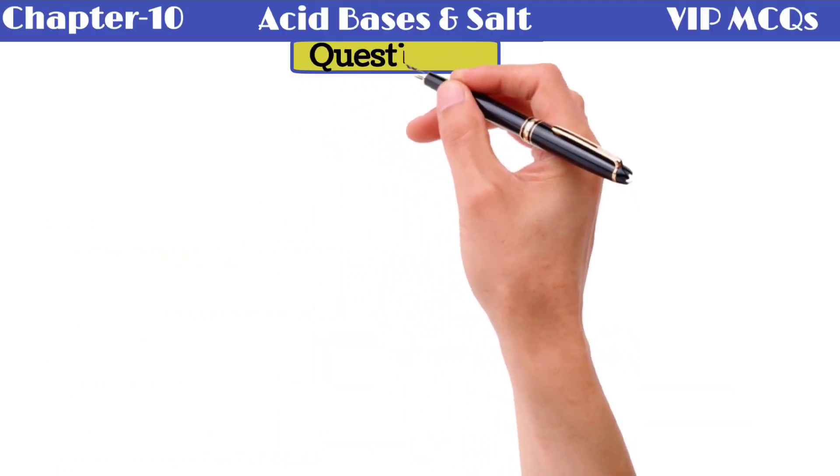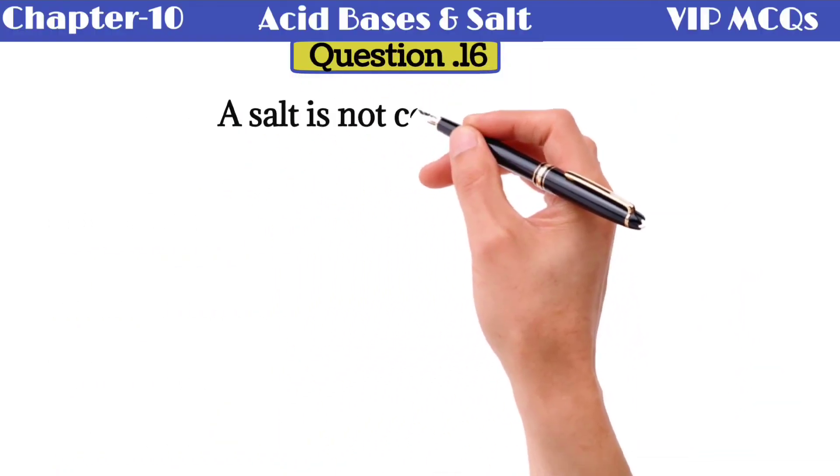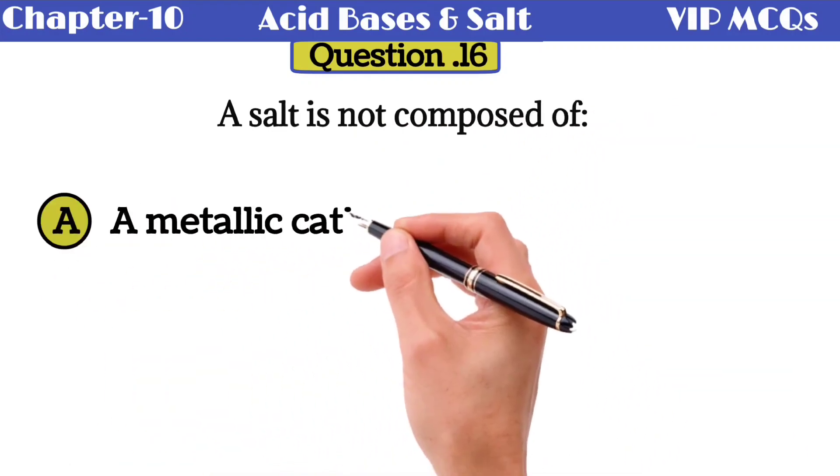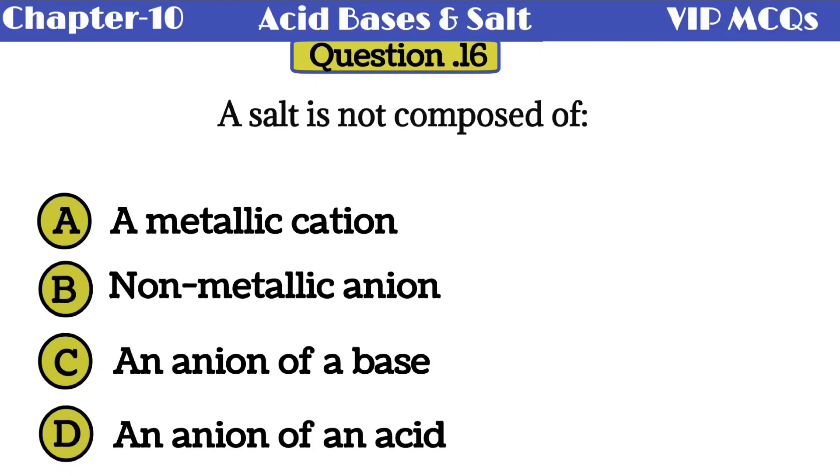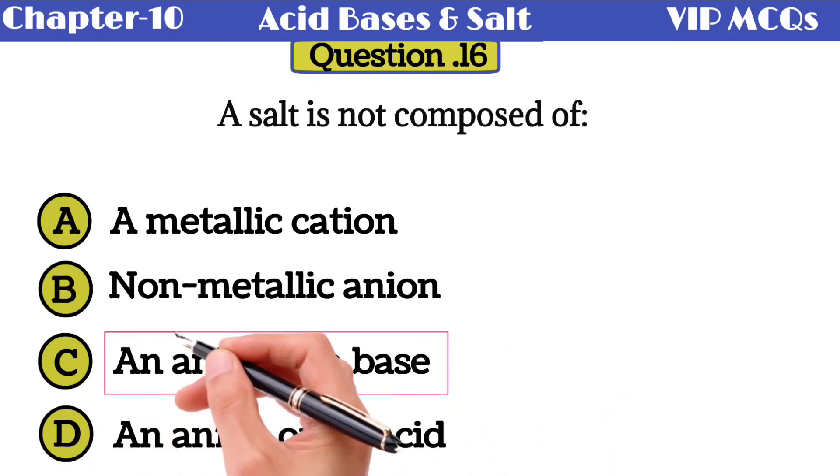Question number 16: a salt is not composed of - a metallic cation, non-metallic anion, an anion of a base, or an anion of an acid? A salt is not composed of an anion of a base.